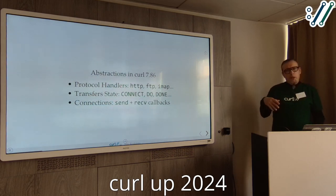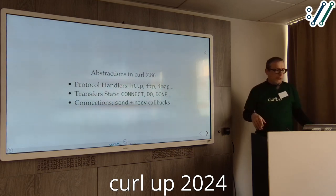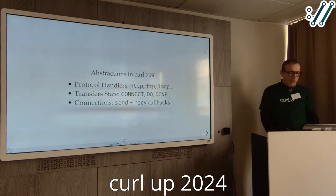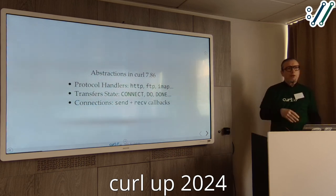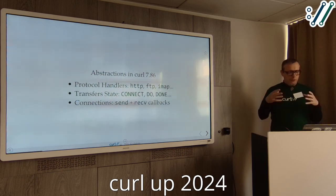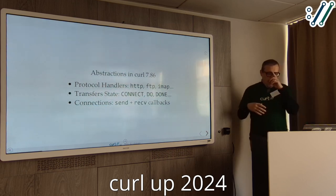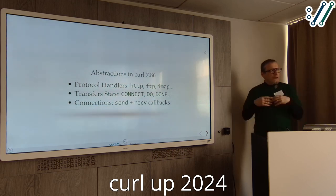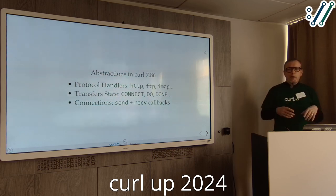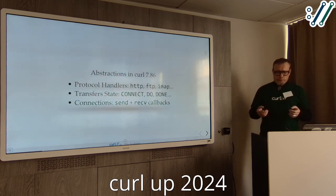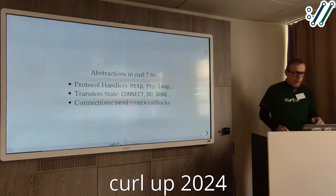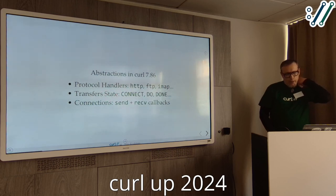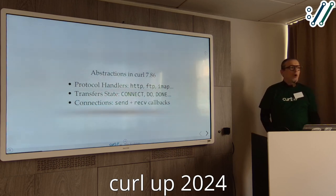In curl 7.8.6 there were a couple of abstractions. You have the protocol handlers — specific implementations for the URL schemes. Each transfer has specific states: it is connecting, it is performing, it is done — like a state machine in general. And for sending and receiving for a transfer, the connections have callbacks.